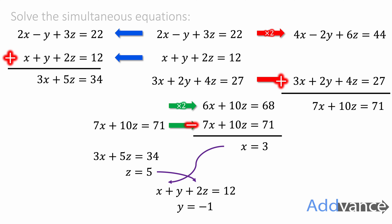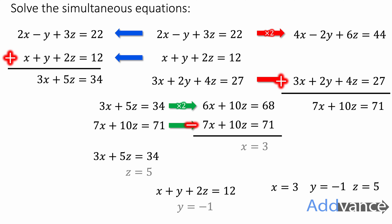Take 13 off both sides. y is equal to minus 1. And we've finally got x is 3, z is 5 and y is minus 1. They are the final answers.